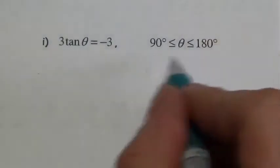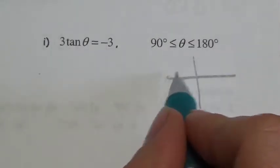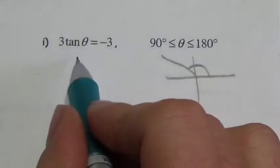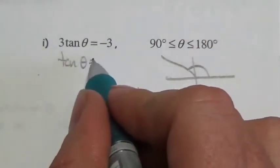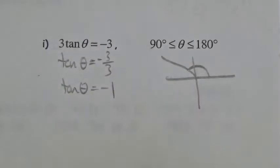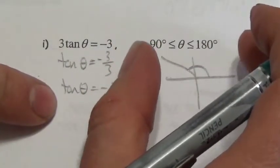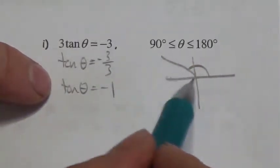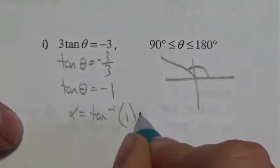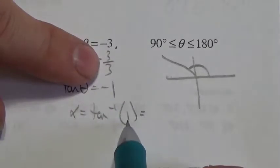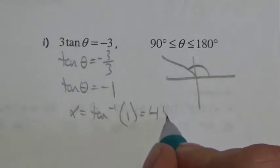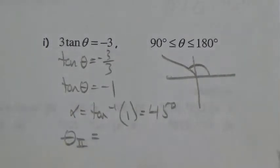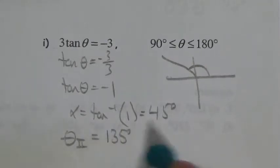Last question: the domain is 90 to 180, which is quadrant 2. Deal with the algebra first — divide both sides by 3, giving tangent of theta equals negative 1. The interval corresponds to quadrant 2 where tangent is negative. For the reference angle, the inverse tangent of 1: opposite and adjacent are equal, so that's the 45-45-90 triangle, giving 45 degrees. In quadrant 2: 180 minus 45 equals 135 degrees.